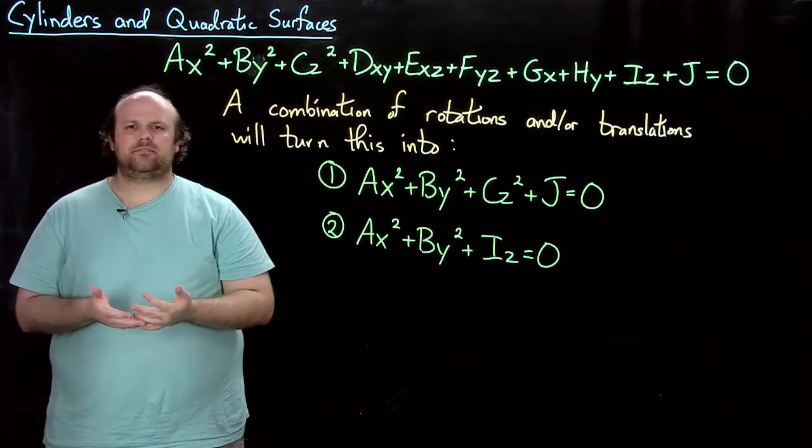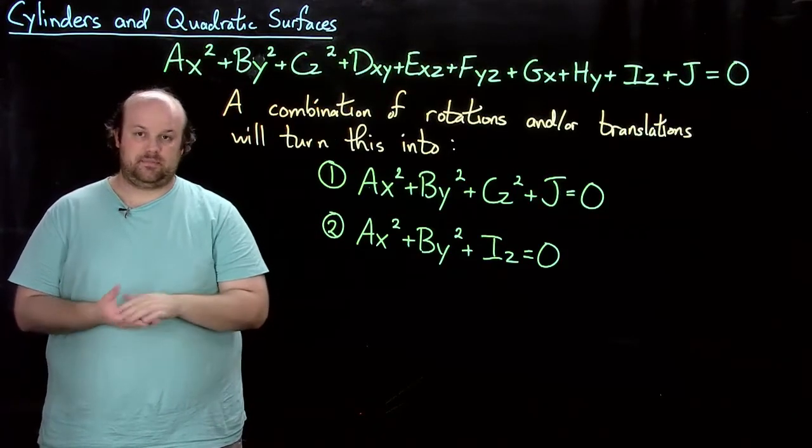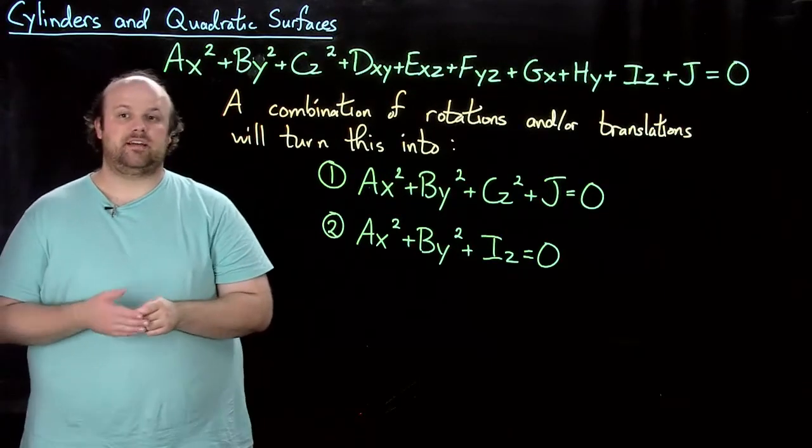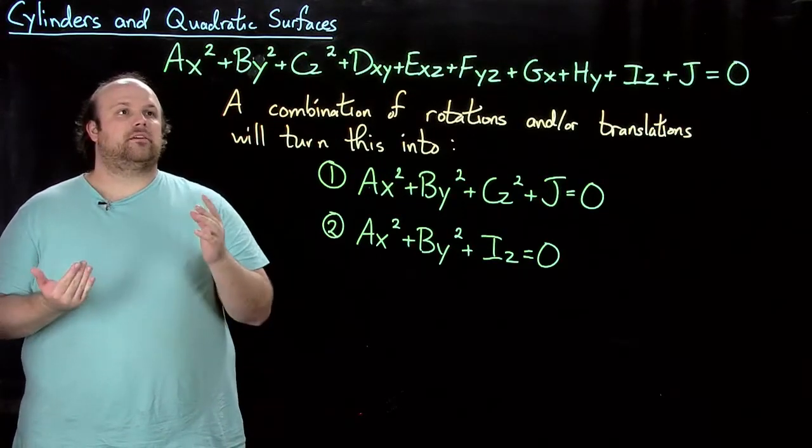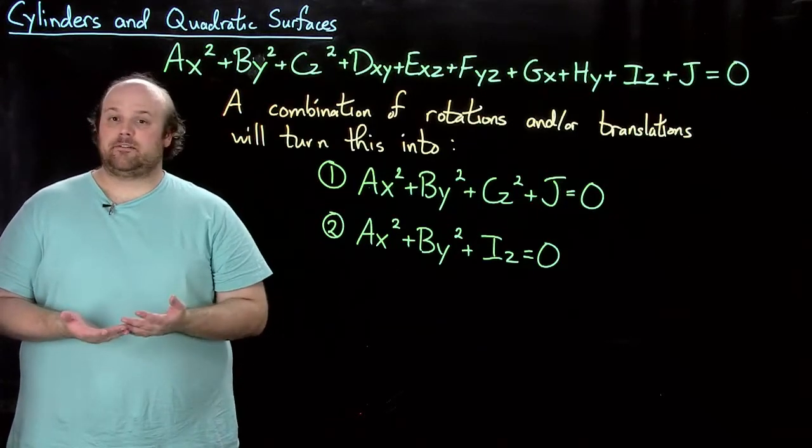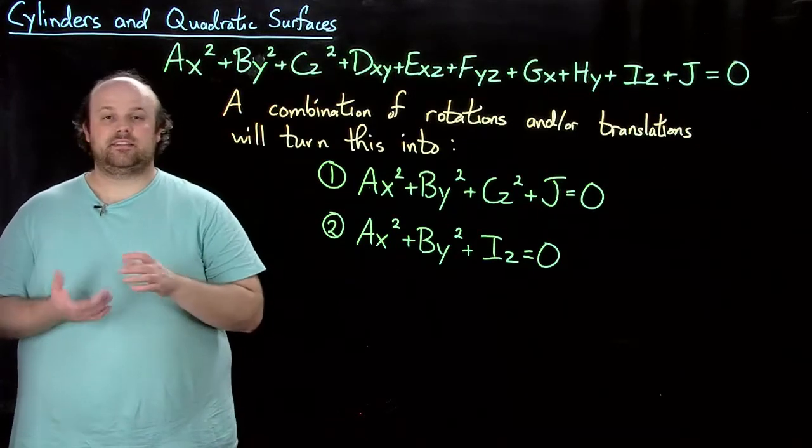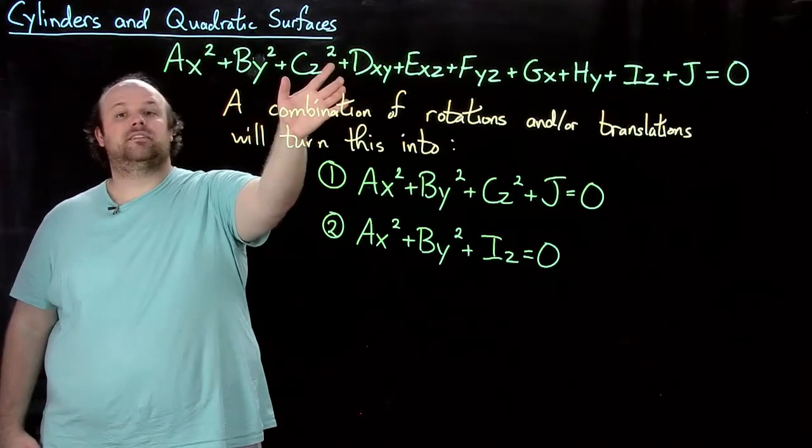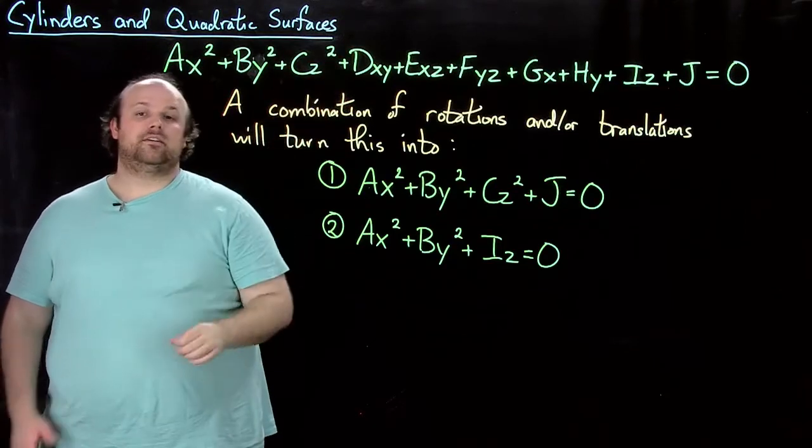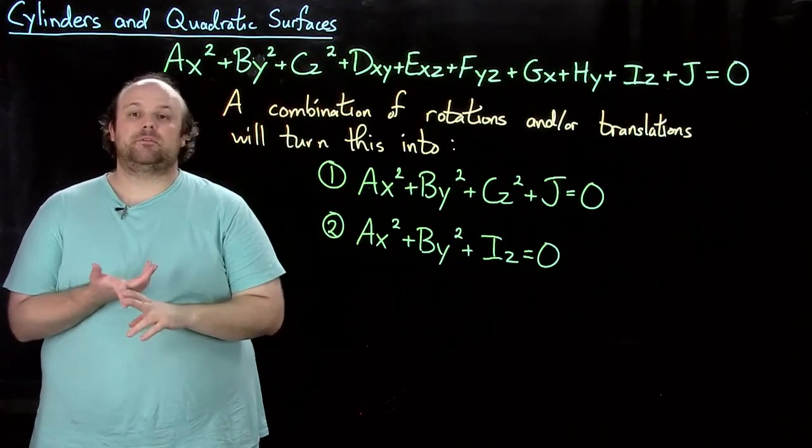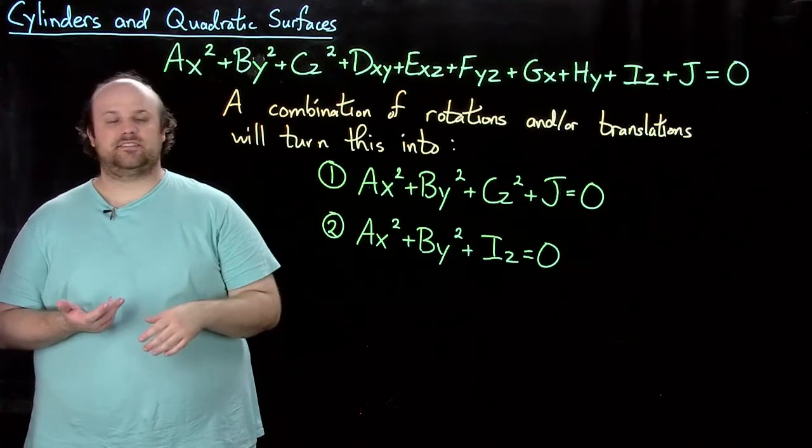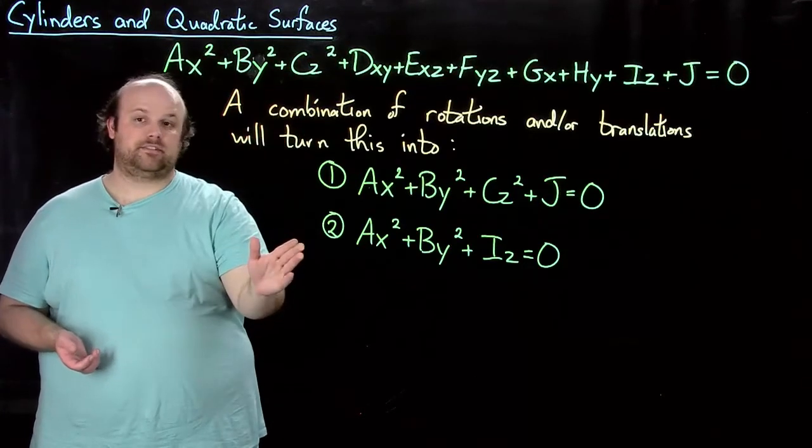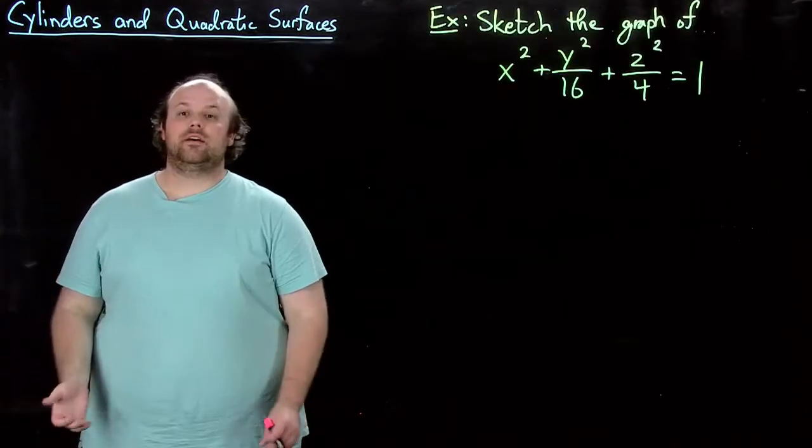So let me say a little bit about how that happens. Or I should say what kind of tricks you would have to use to do that. Maybe you'll go on to take a class called Linear Algebra. And this is really a Linear Algebra technique. You use that to kind of switch this. You can really easily talk about rotations in Linear Algebra and translations there as well. And you can see how this can get turned into one of these.